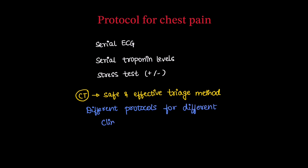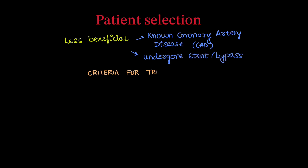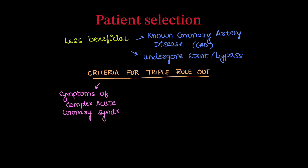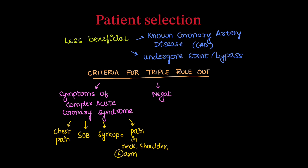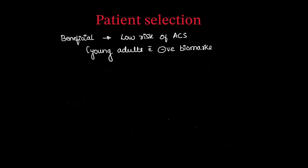For triple rule out CT angio, patients who are less likely to benefit are those with known coronary disease, prior history of stenting or bypass surgery — it is of limited use in such patients. The ideal criteria for triple rule out is a patient presenting with symptoms suggestive of complex acute coronary syndrome, such as chest pain, shortness of breath, syncope, and pain in the neck or left arm, with negative biomarkers and no ECG changes. If biomarkers are positive, CT coronary angiography alone is preferred. The most benefited patients are low-risk ACS individuals — typically young adults with negative biomarkers and no ECG changes.